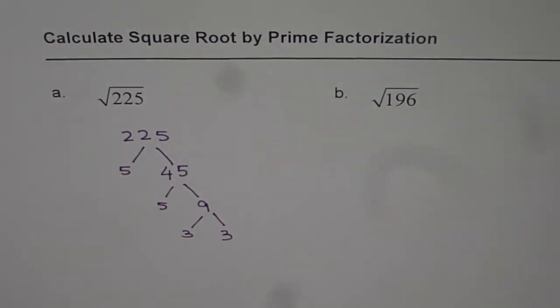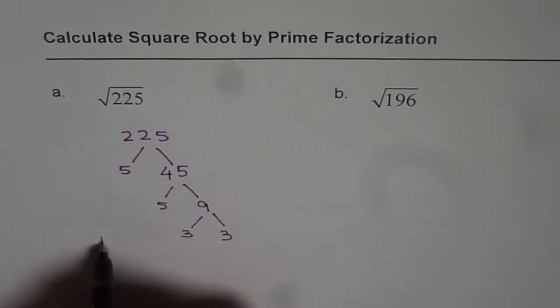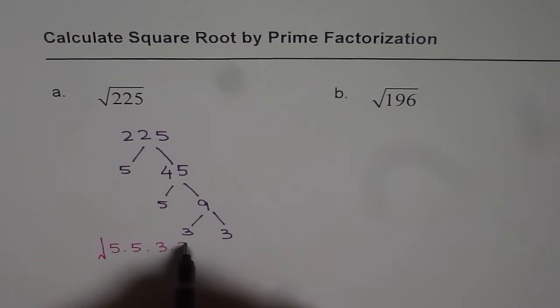From here, what you notice is a set of prime factors which could be multiples of themselves. 5 times 5 and 3 times 3. So we can write square root of 225 as 5 times 5 times 3 times 3.